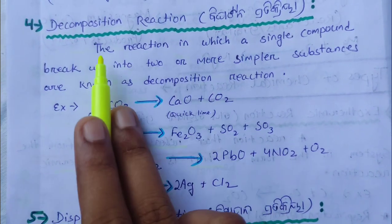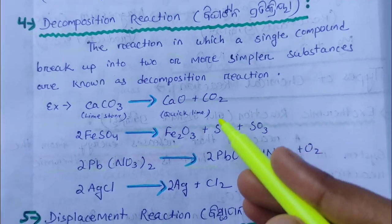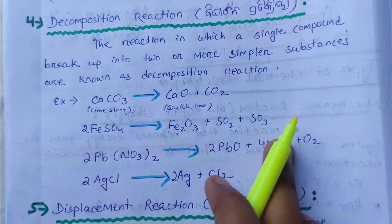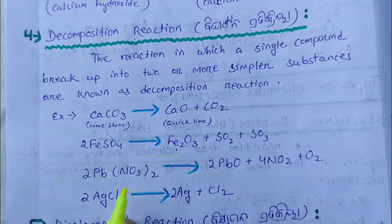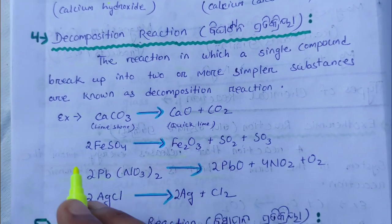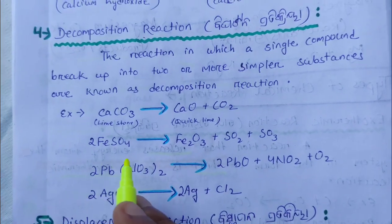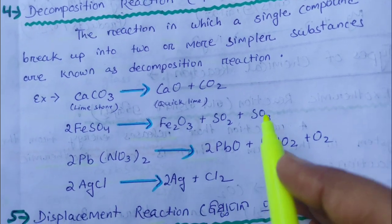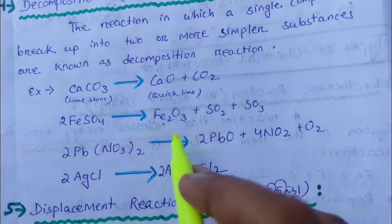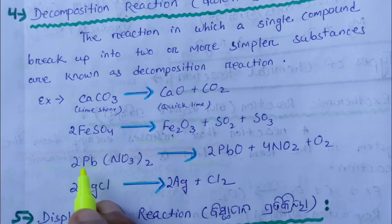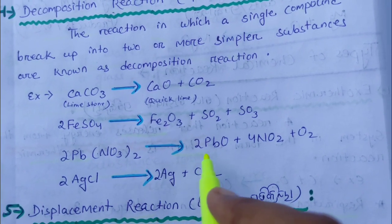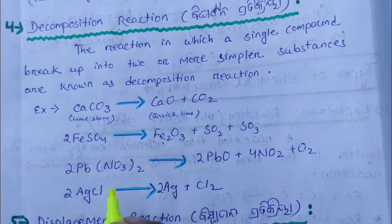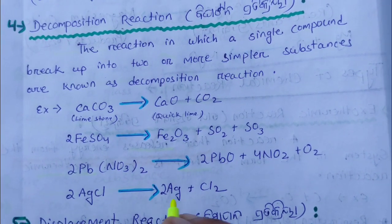For example: CaCO₃ → CaO + CO₂. Also: 2FeSO₄ → Fe₂O₃ + SO₂ + SO₃. And: 2Pb(NO₃)₂ → 2PbO + 4NO₂ + O₂.